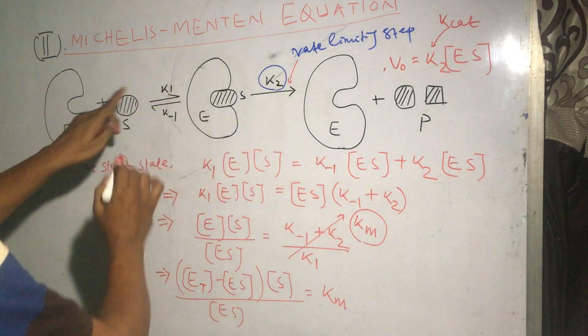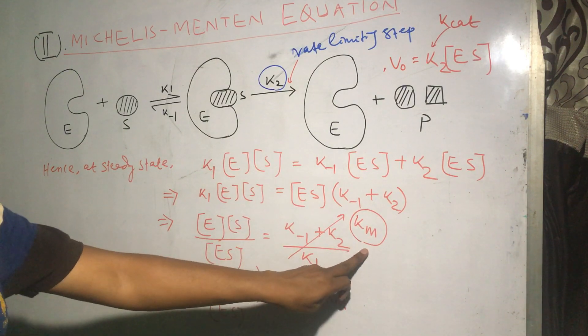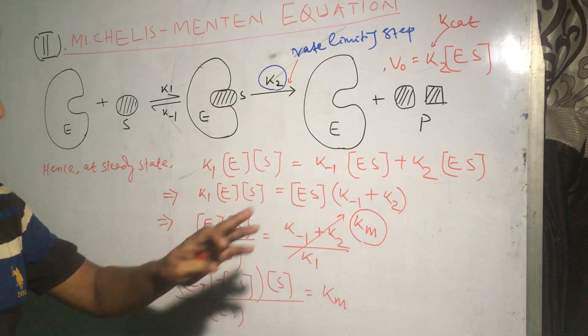We combined all three constants K1, K2, and K minus 1 into one constant that is called the Michaelis constant, which is designated as KM.